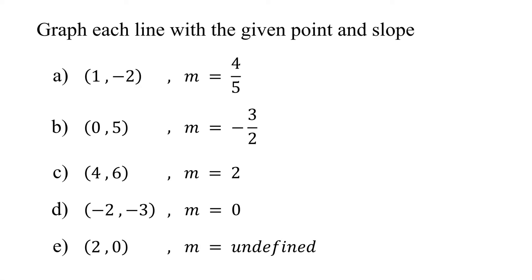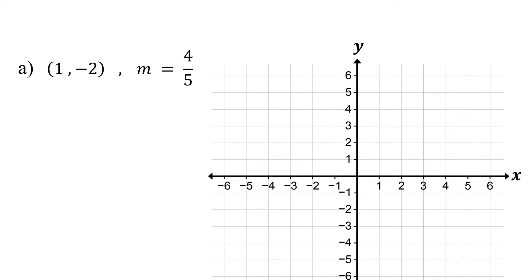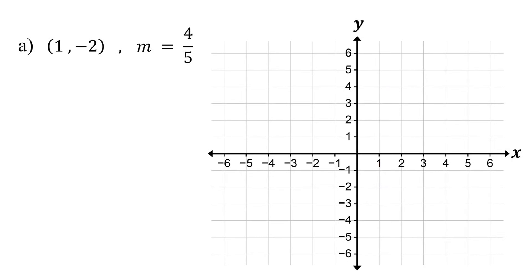In this lesson, you will learn how to graph a line given a point and a slope. The first step is to plot the point on the coordinate plane. Plot the point 1, negative 2. This is our starting point.